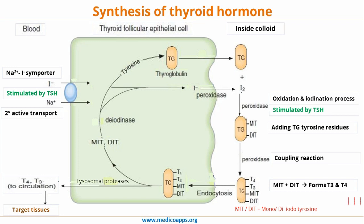The fourth step is where T3 and T4 are stored inside the thyroid follicular epithelial cells, and finally the fifth step is where, with the help of lysosomal proteases, T3 and T4 are released into the circulation.